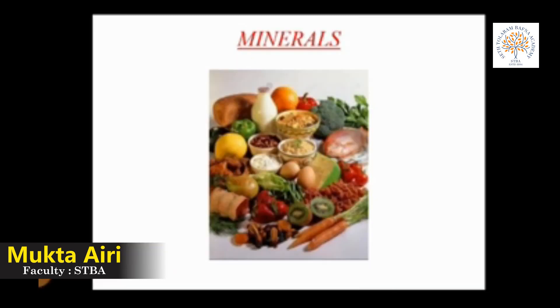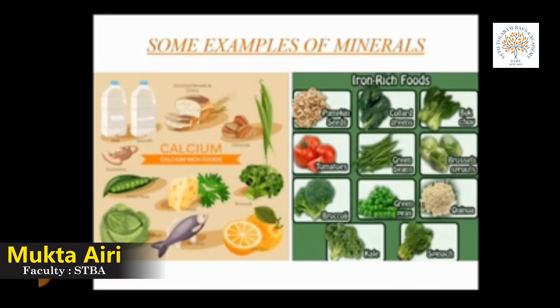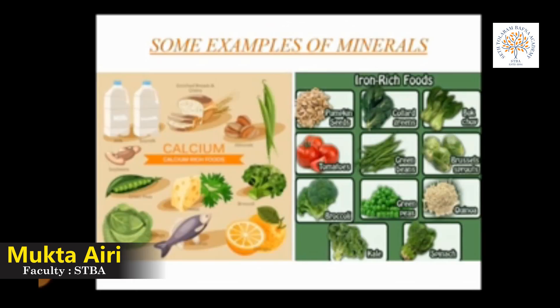Next is minerals. Minerals are also a protective food. Our body requires small amounts of minerals like calcium, sodium and iron. Some examples of minerals are calcium and iron. Calcium makes our bones and teeth strong and also helps blood to clot. Calcium is found in milk, dairy products and green vegetables. Iron rich food helps in the formation of blood and body, increases hemoglobin and prevents anemia. Iron is found in pumpkin seeds, tomato, red meat, fish and green vegetables.